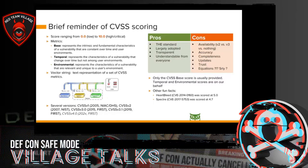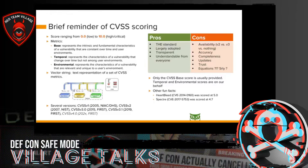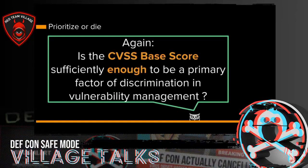However, the CVSS base score is usually provided, but the temporal and environmental scores are on our behalf — we have clues and information from many sources that are not always on the same page. As a fun fact: Heartbleed was scored at 5 and Spectre was scored at 5.5. So if we use just the CVSS base score as a primary discriminator, it's not sufficient enough to do our job.